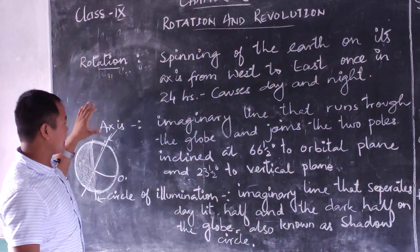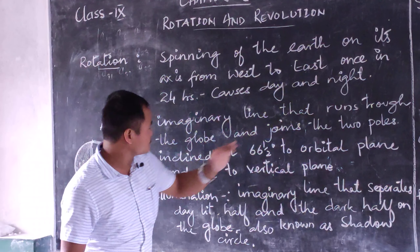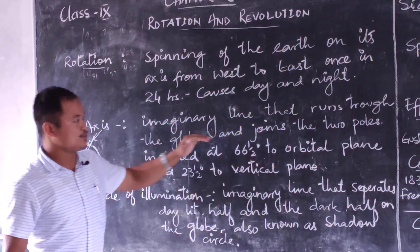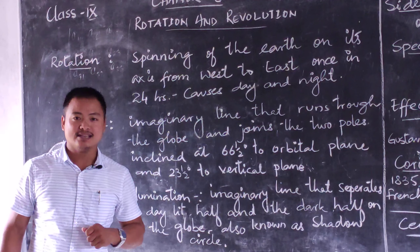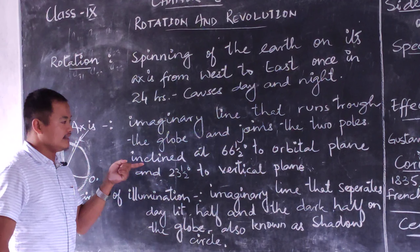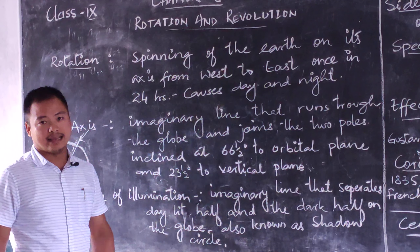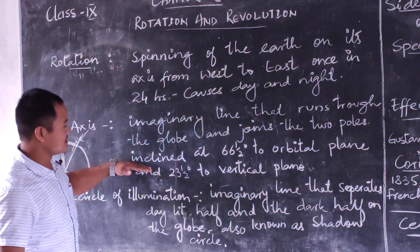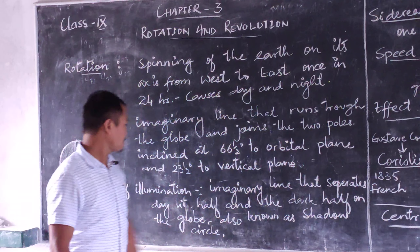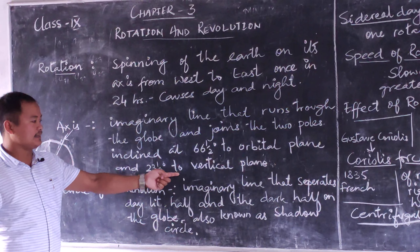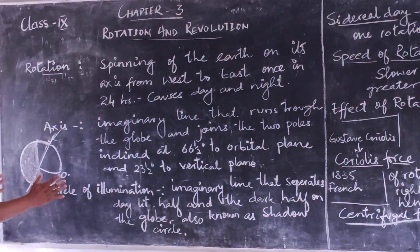The rotation of the earth takes place on its axis. The axis is an imaginary line that runs through the globe and joins the two poles — the north pole and the south pole. The axis is not straight at 90 degrees; rather, it is inclined at 66 and a half degrees to its orbital plane and 23 and a half degrees to its vertical plane.